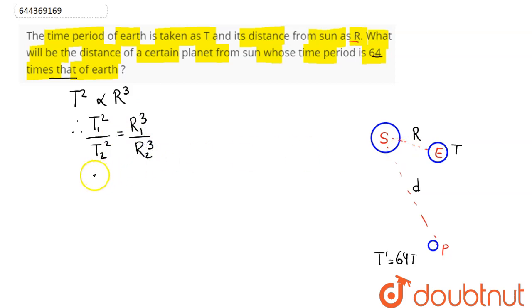Now T₁ here is T whole square and corresponding to it distance is R, so R³ divided by